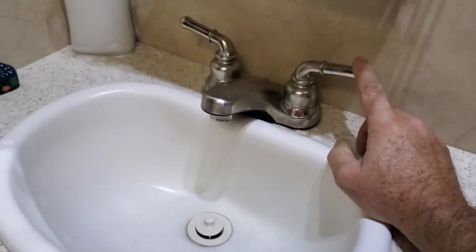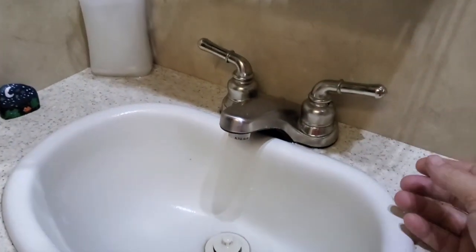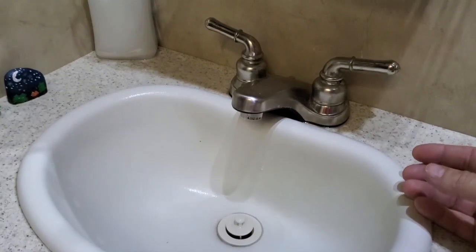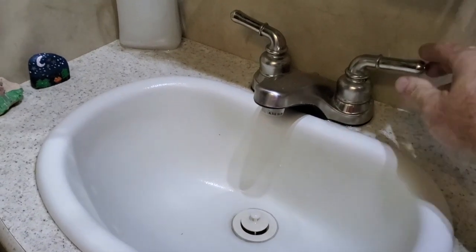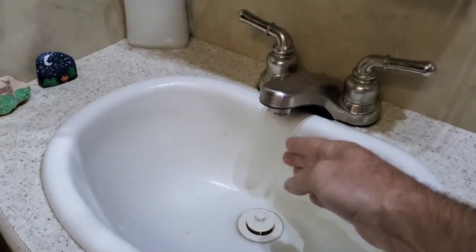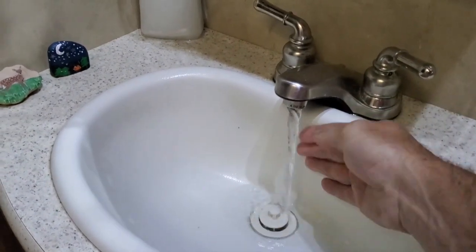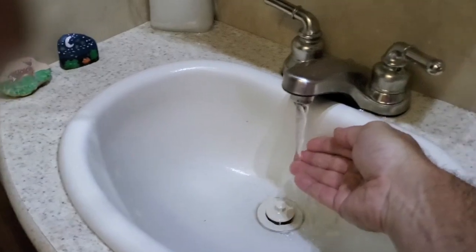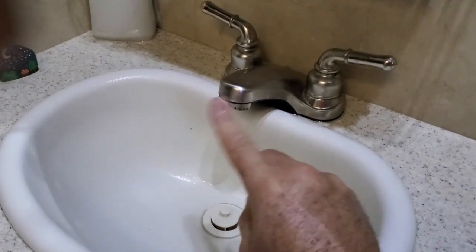This is the faucet that came with the RV. Normally it's okay, it's camper grade, but it has two big issues. Number one, the outlet spout is too close to this back wall so when you have the water on you can't even get your hands under. You can't get your hands under to get your hands wet, so that's bad.